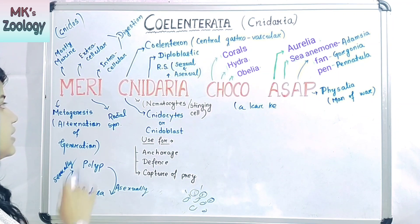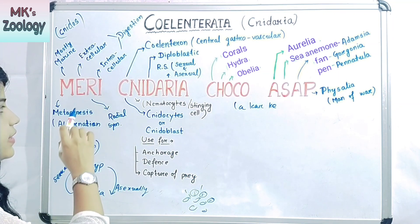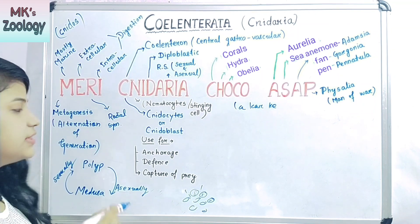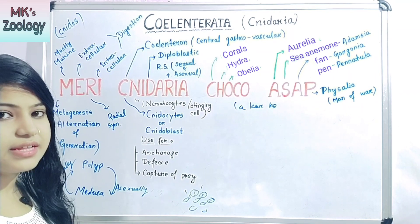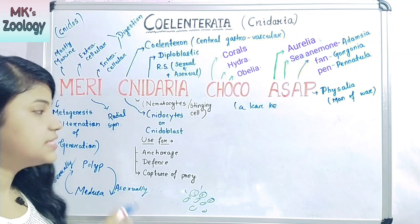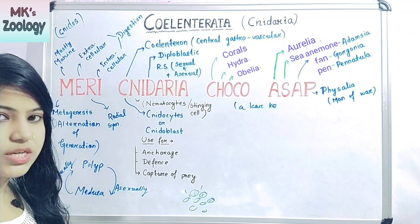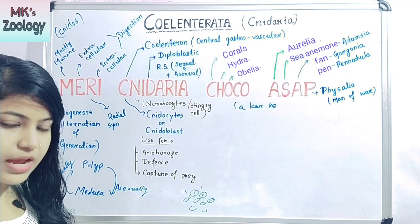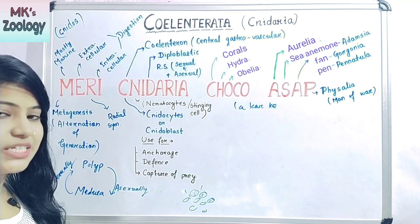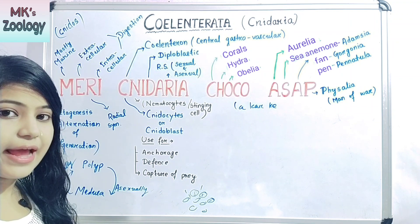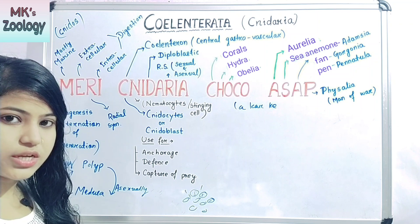The next letter R stands for radially symmetrical. These are animals with a radially symmetrical body form. All animals like Coelenterata, Ctenophora, and adult echinoderms are radially symmetrical.